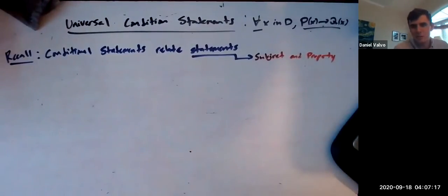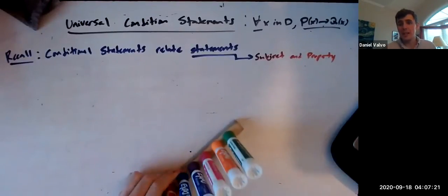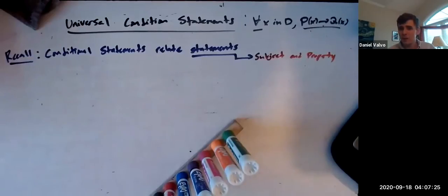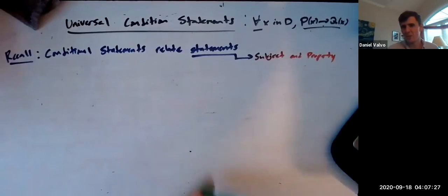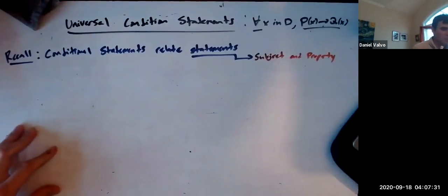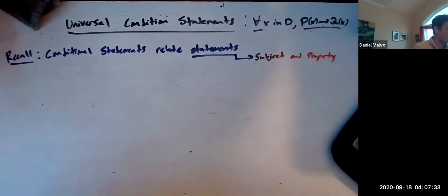Basically every single statement you make has a subject and it has a property. I'm wearing a purple shirt - that's saying Daniel Valvo has the property that he is wearing a purple shirt. And he loves it, by the way. That's not a statement, that's kind of subjective, but I just want to tell you guys that. So this is my very long purple shirt. There's a subject and a property, right?